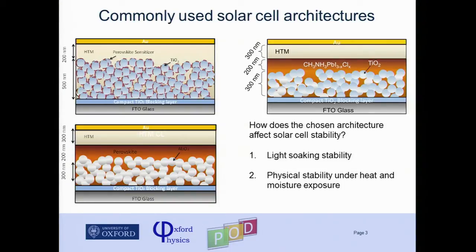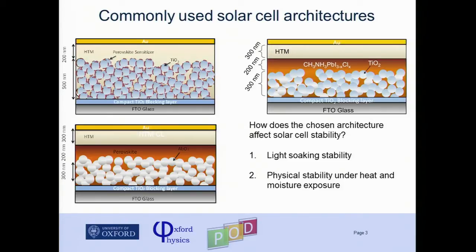...we have a system where we actually infiltrate the mesoporous TiO2 completely with the perovskite. In this case, we still think we have electron injection into the TiO2 — there's a lot of spectroscopic evidence supporting this — and then hole transport through the perovskite. We still use a selective hole contact on top, which gives us the best performances. We've also developed a structure where we replace the mesoporous TiO2 completely and instead use either a mesoporous alumina scaffold or no scaffold at all. All of these structures are more or less in the same ballpark of efficiency, around 15 up to 17%.